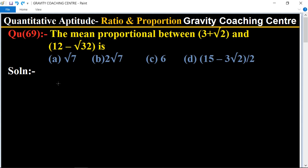root 32 is. We know that mean proportional between a and b equals root ab.